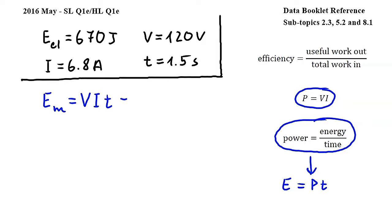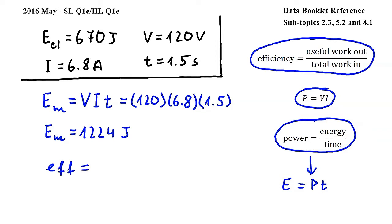Substituting gives us 120 times 6.8 times 1.5. This gives us 1224 joules for the energy supplied by the motor.